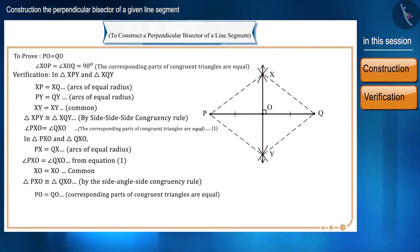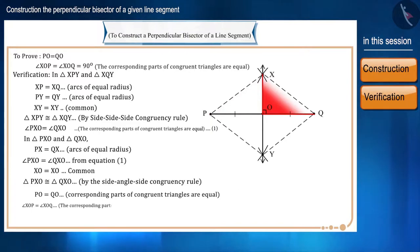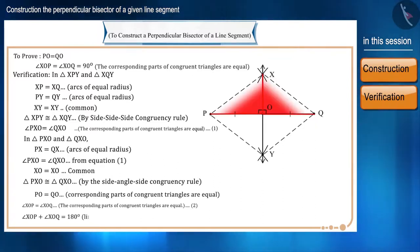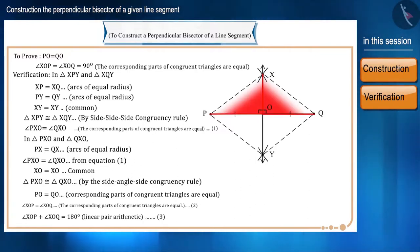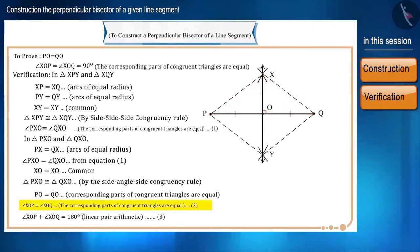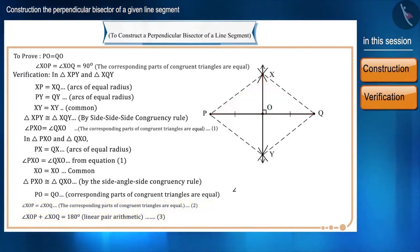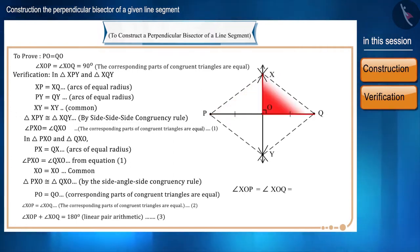Angle XOP equals angle XOQ because the corresponding parts of congruent triangles are equal — let this be equation 2. Also, angle XOP plus angle XOQ equals 180 degrees because these angles form a linear pair — let this be equation 3. From equations 2 and 3, angle XOP equals angle XOQ, and therefore both angles are 90 degrees. That is, XY is perpendicular to PQ.